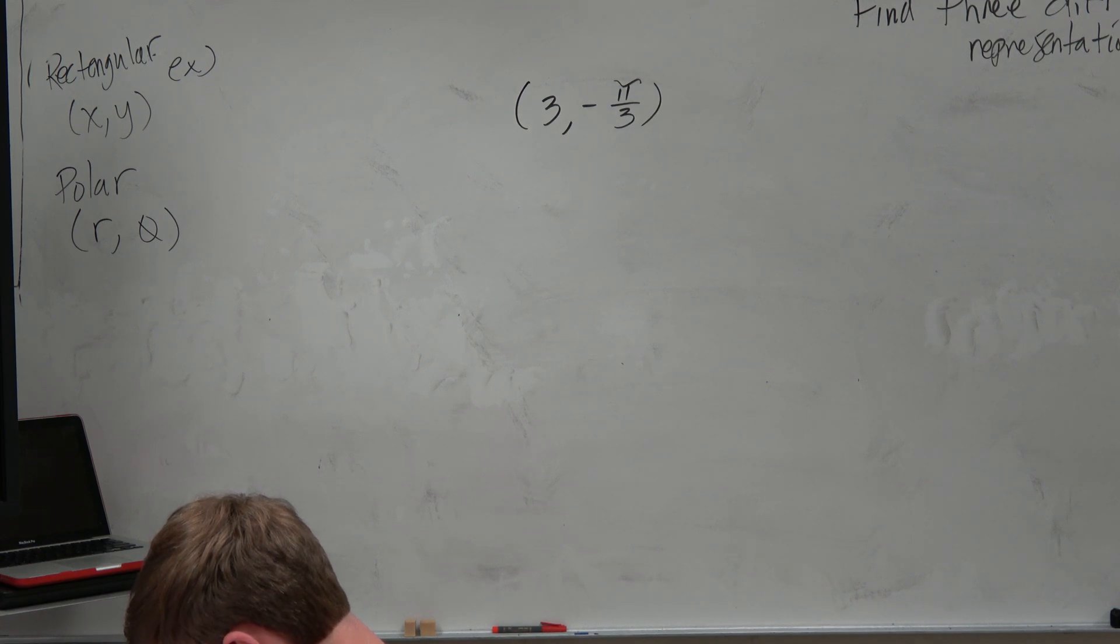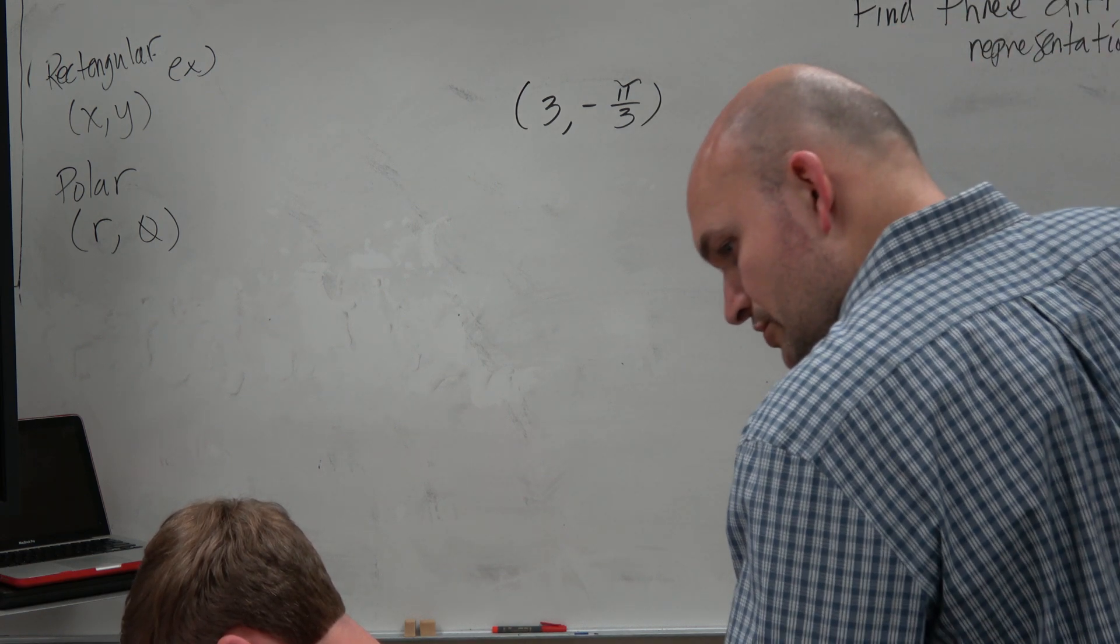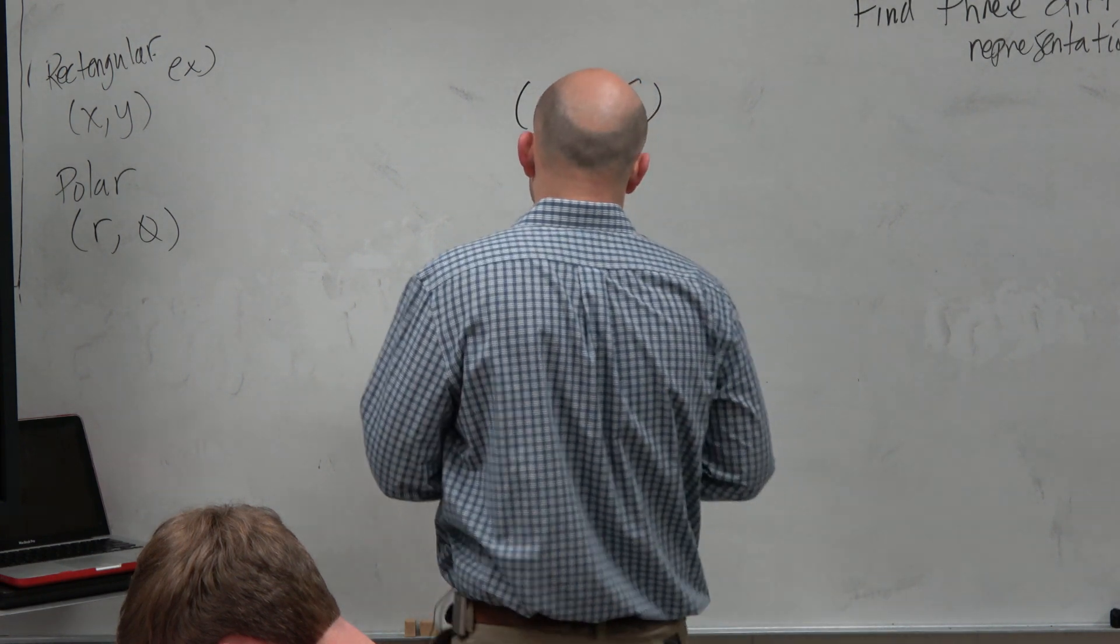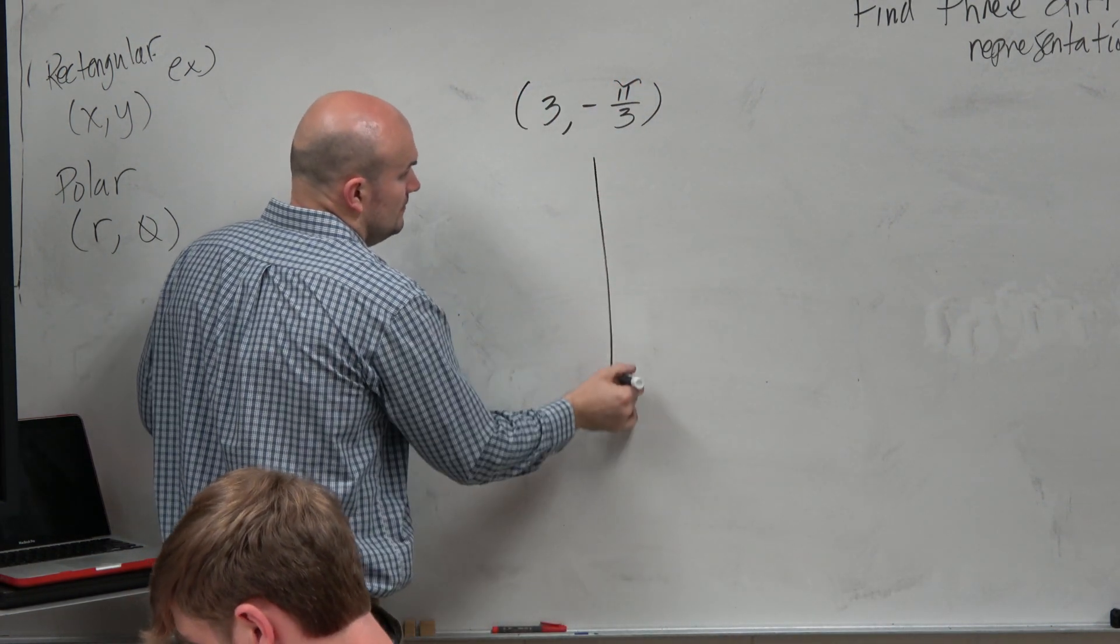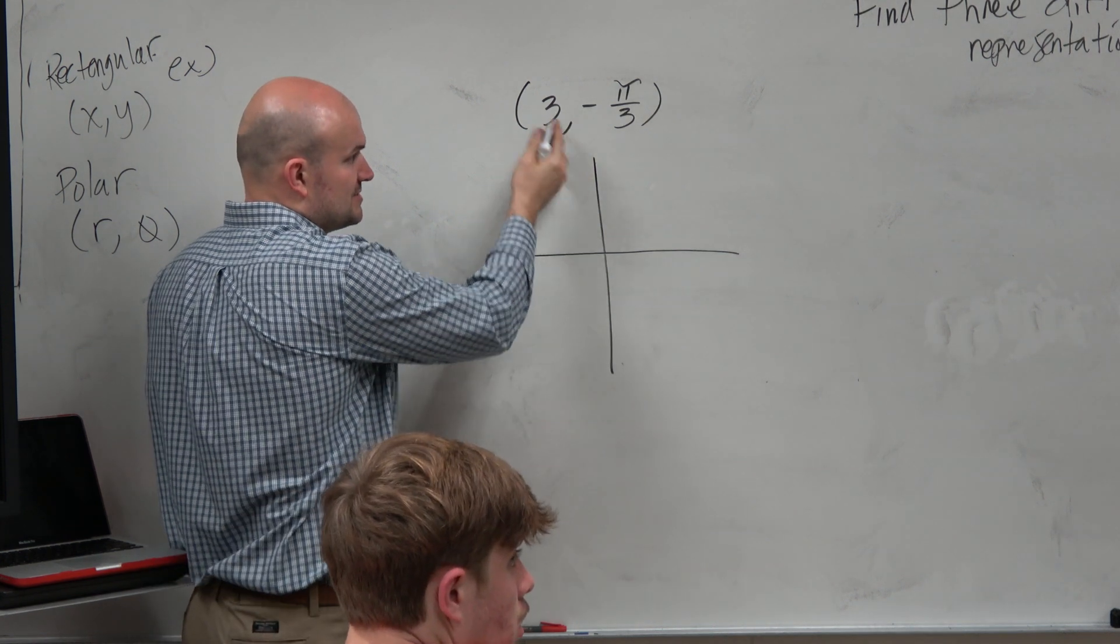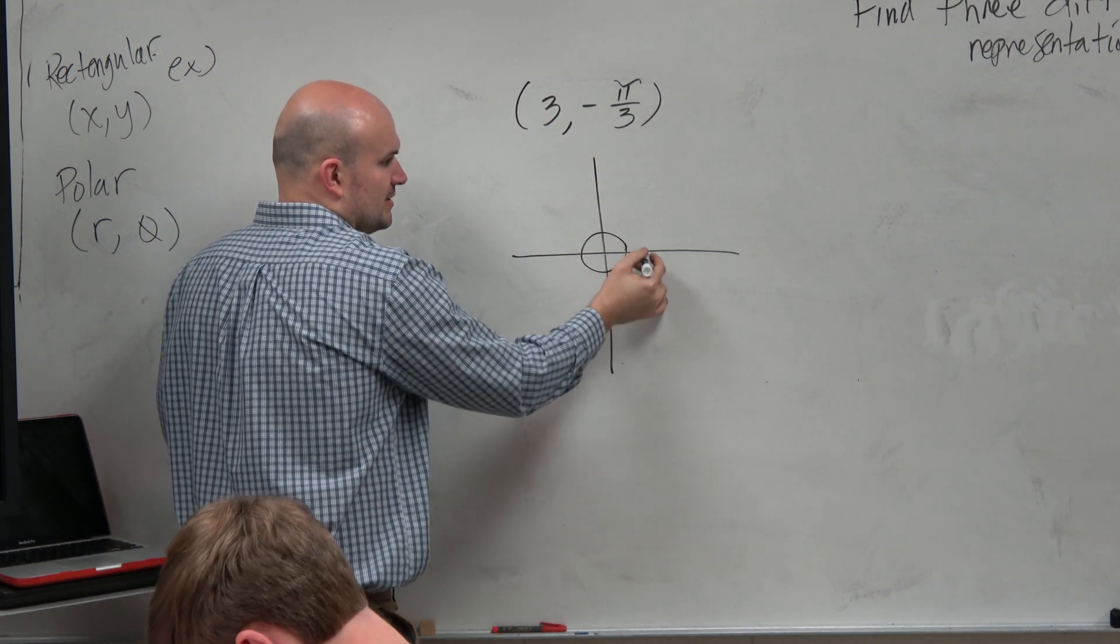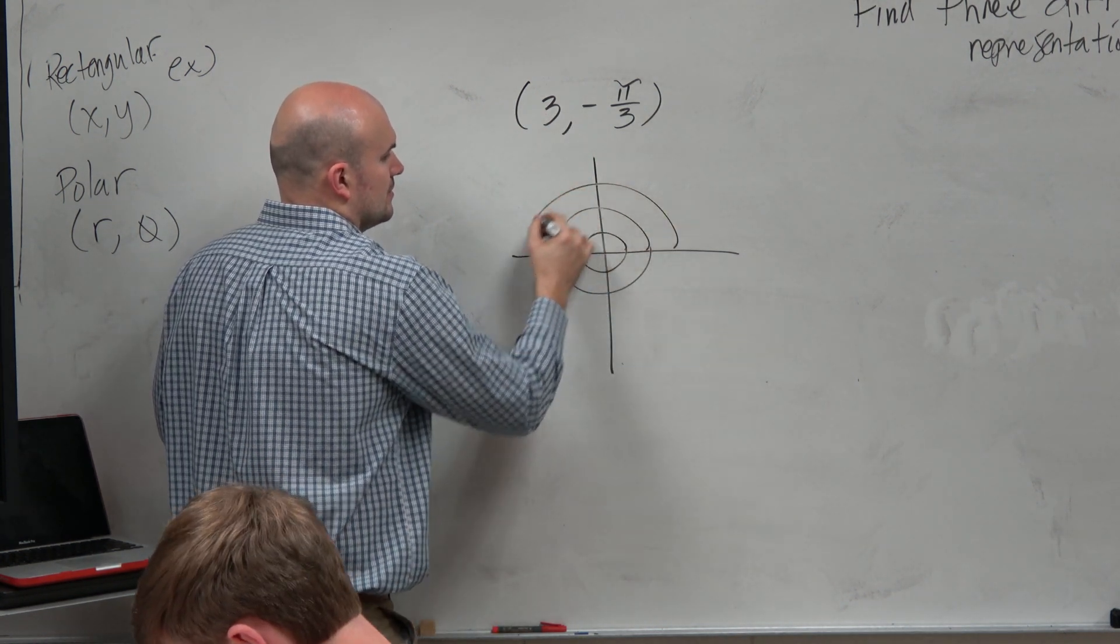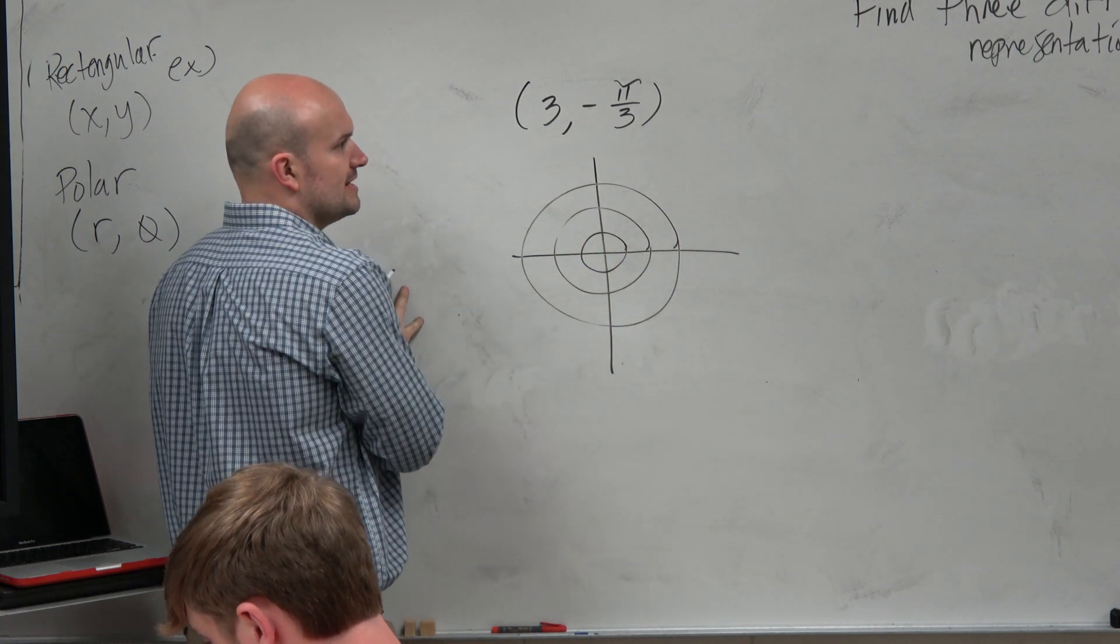So the first thing I want you guys to do, at least for this one, is to be able to plot the points. Hopefully in this one you guys recognize we have a radius of 3, so we can kind of think about like three rings here.